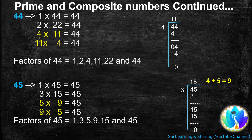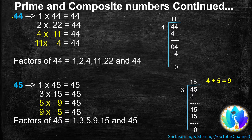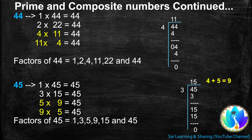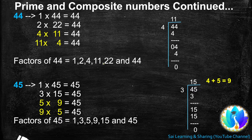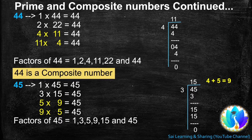44 is a multiple of 4. When we divide 44 by 4, we get quotient 11. 11 is another factor of 44. So, 4s are 11, 44. 44 is not a multiple of 5 or 6. We know 44 is a multiple of 11: 11s are 4, 44. Now we got all the factors of 44 because 4 and 11 occurred earlier. Factors of 44: 1, 2, 4, 11, 22, and 44. A number that gets more than 2 factors is a composite number. So, 44 is a composite number.